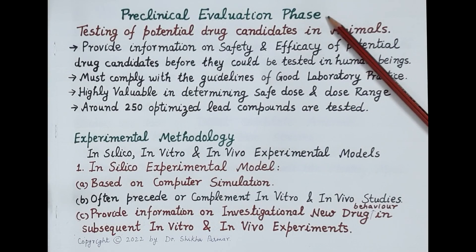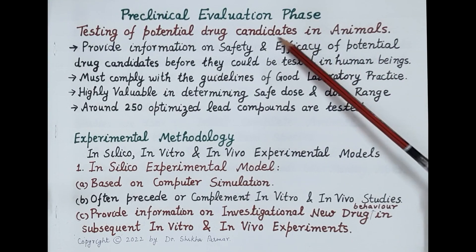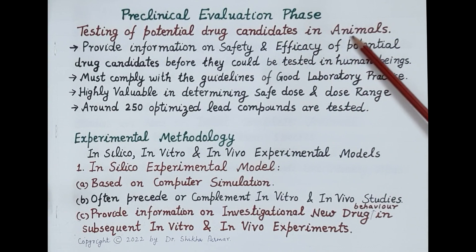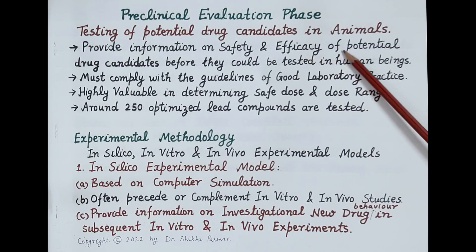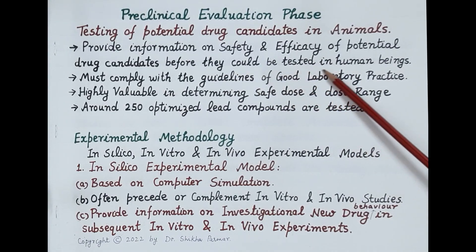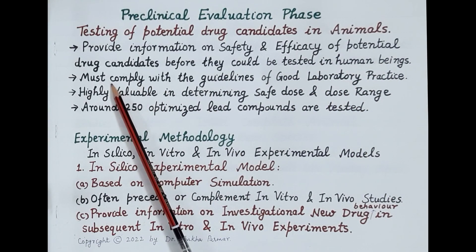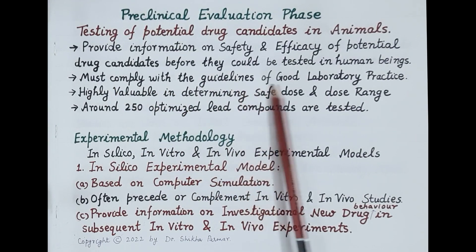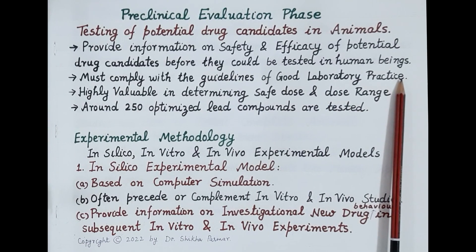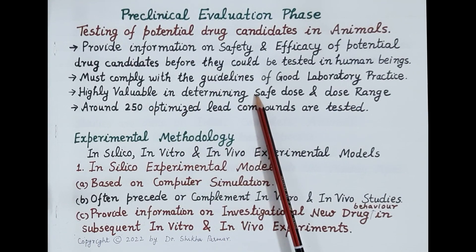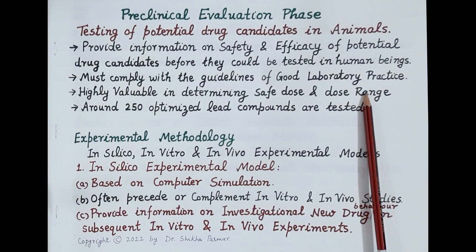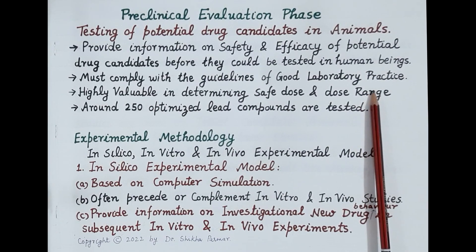Preclinical evaluation phase is where preclinical studies are conducted. These studies involve testing of potential drug candidates in animals and provide information on the safety and efficacy of those candidates before they are tested in human beings. Preclinical studies must comply with the guidelines of Good Laboratory Practice to ensure correct and reliable results, and are highly valuable in determining safe dose and dose range before proceeding to clinical trials.